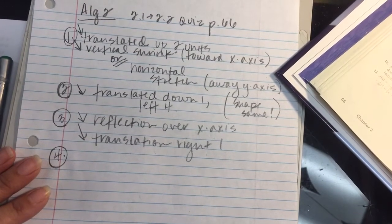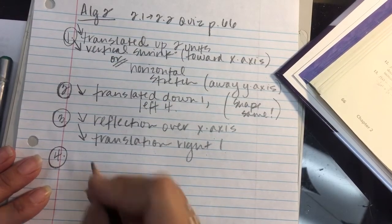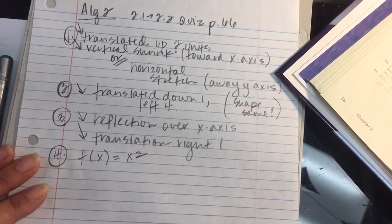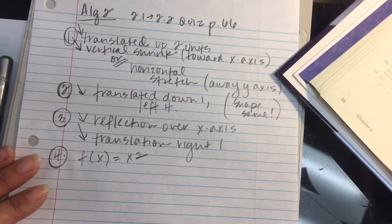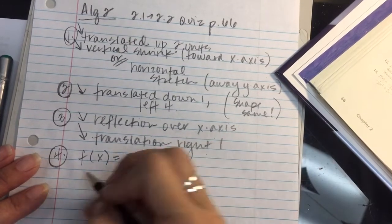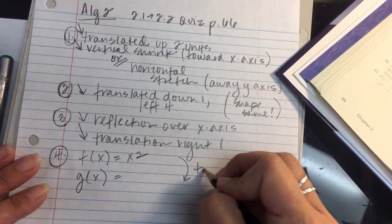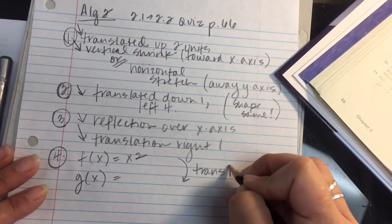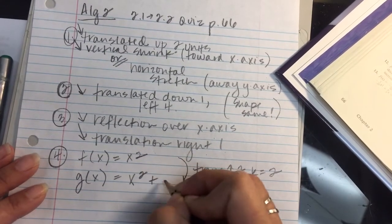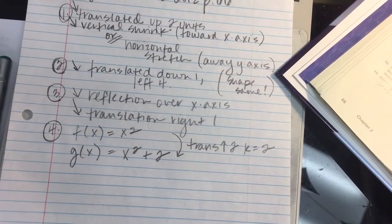Write a rule for G and identify the vertex. In number four, we've got the function that we're going to start out with is f of x equals x squared, and we're given a series of transformations to perform. First one is going to be a translation two units up. So as I prepare to step through this, I've got a translation up two, so that's a k value of two. So the first transformation is going to happen with x squared plus two.